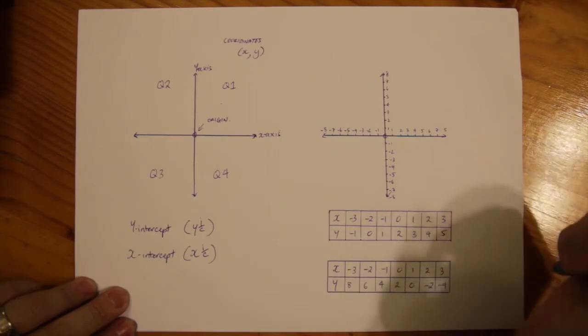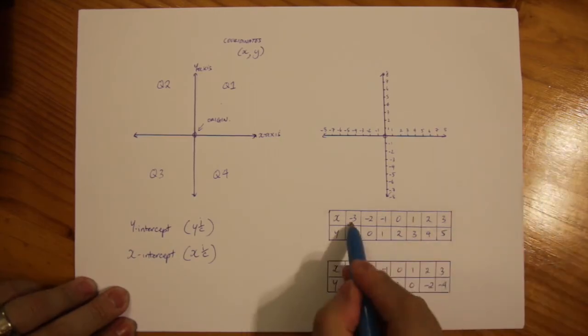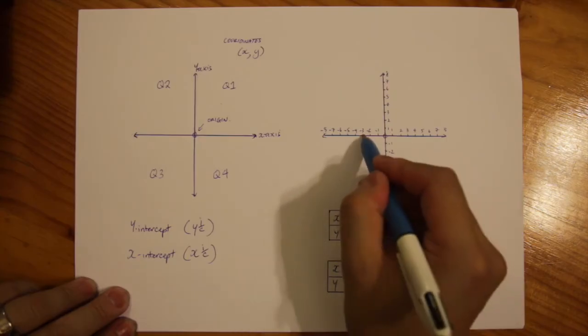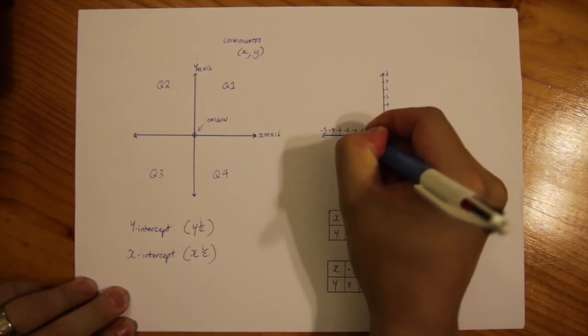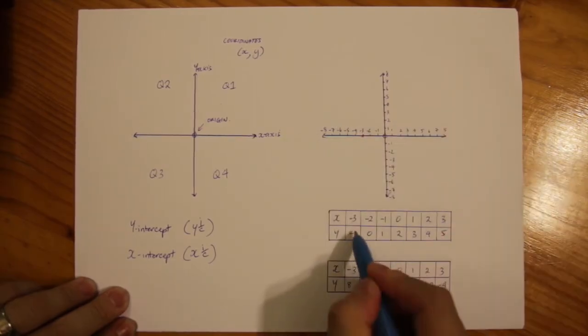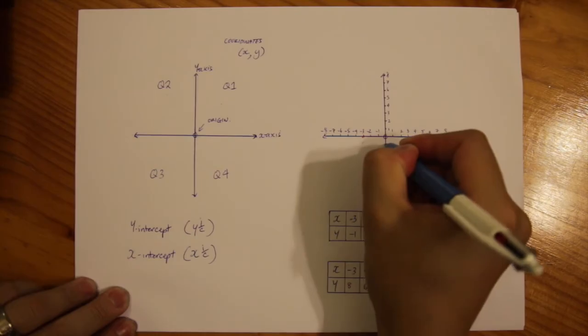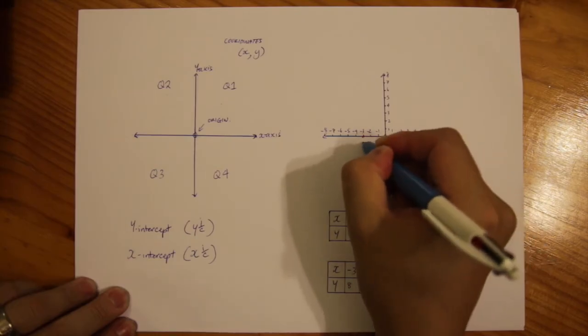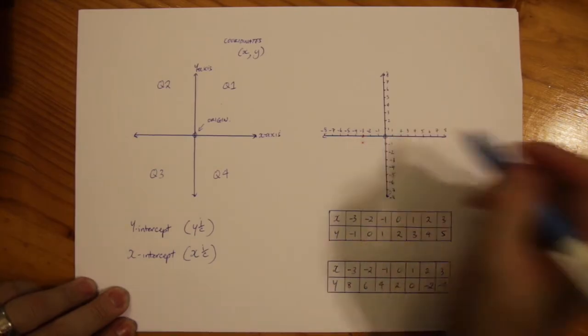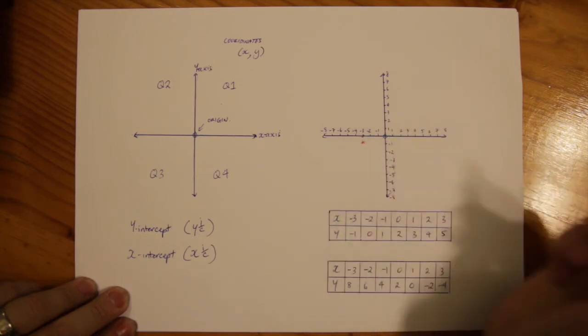So simply find the value of x which is negative 3 over here for the first set. Negative 3 is over there. And then y at the same time when x is minus 3 is negative 1. So here, so there's y for negative 1, x for minus 3. Our point is right there where I've marked the x.